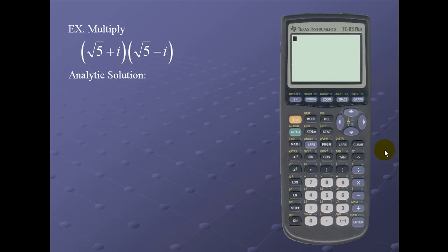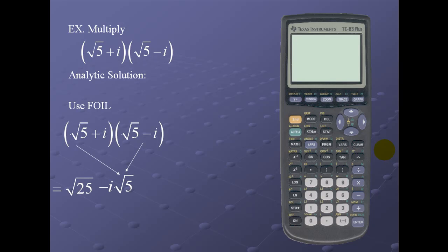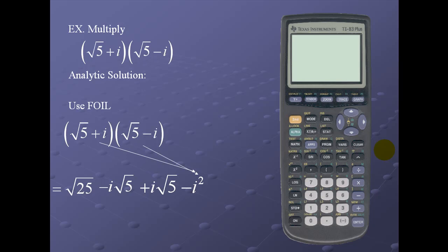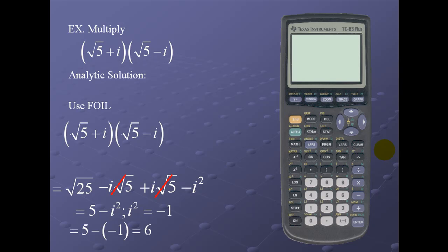Next we'll multiply: (√5 + i) times (√5 - i), which is actually a sum and difference of squares. Here we'll use the FOIL method. Multiplying the first terms, the outermost terms, the innermost terms, and the last terms — notice that the outermost and innermost terms cancel. We're left with 5 - i². Since i² = -1, we make the substitution for a result of 6.